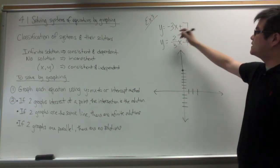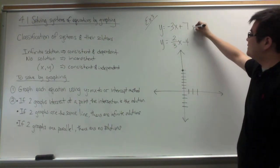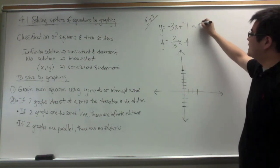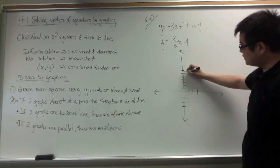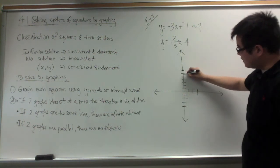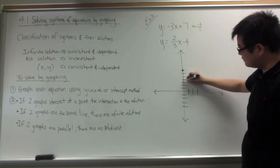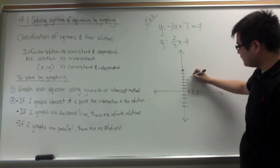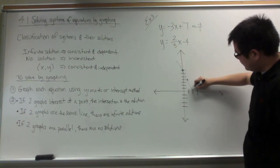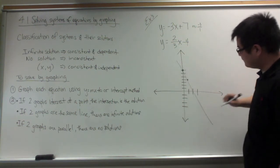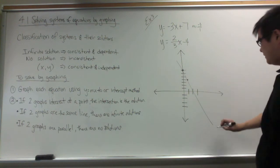Then, we are going to use the slope. The slope in this example is negative 3 over 1. So, I am going to go down 3 and over 1 spot. This would be the equation of the line.